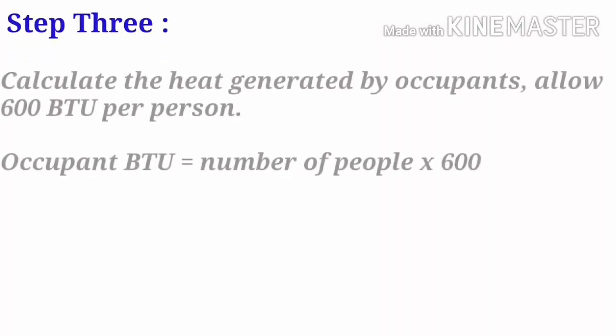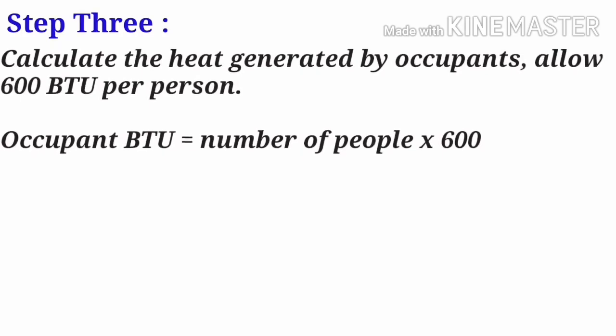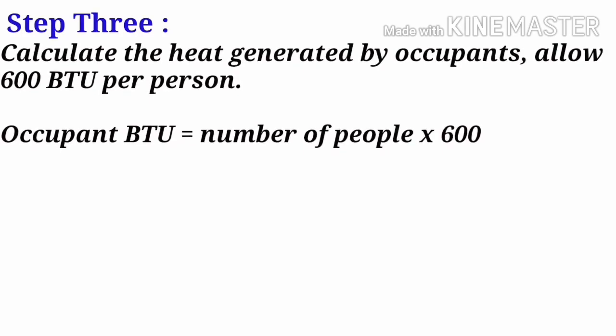Step 3: Calculate the heat generated by occupants. Allow 600 BTU per person. Occupant (BTU) equals number of people multiplied by 600.